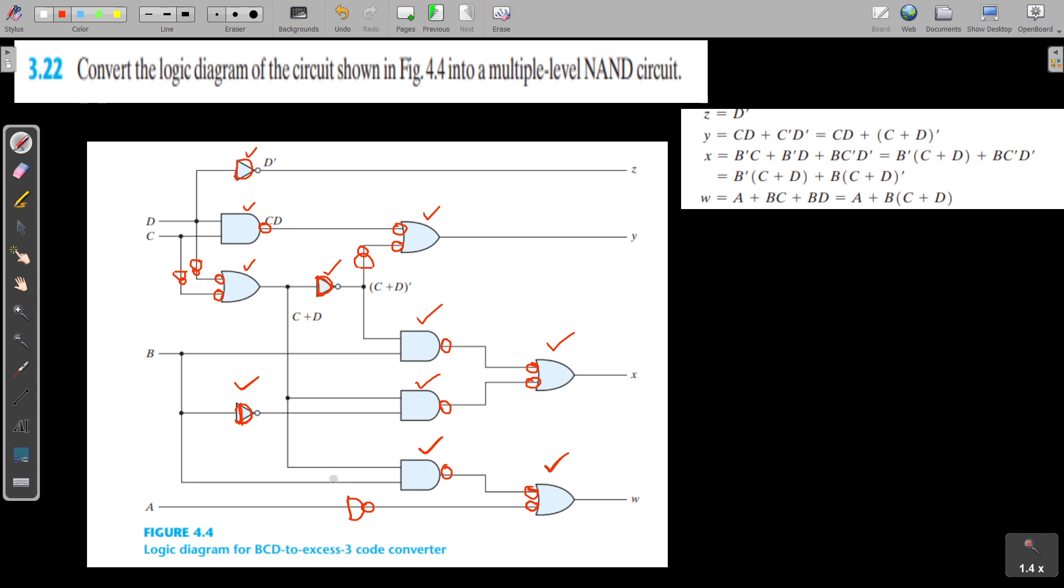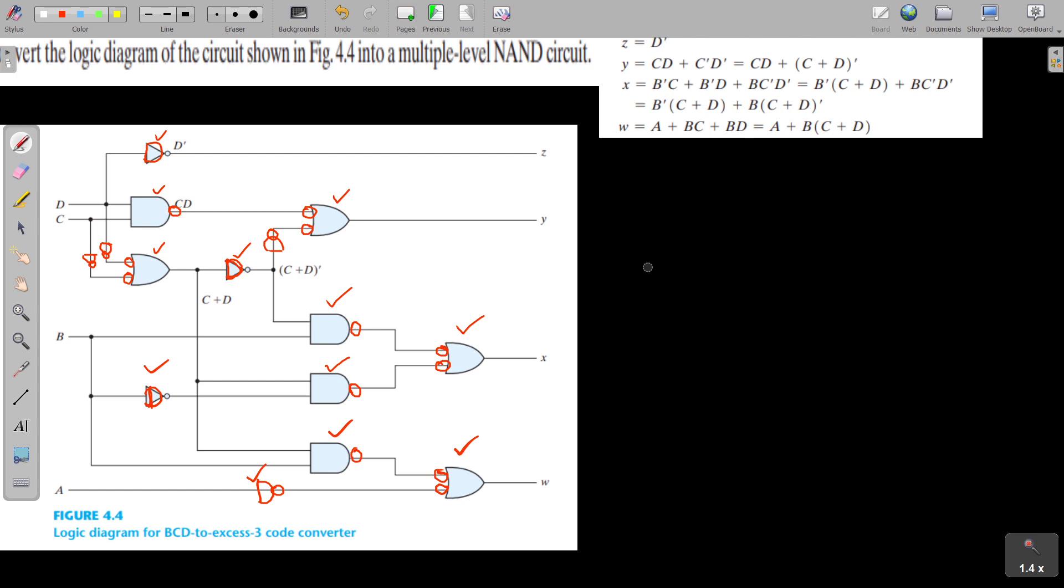So we have converted everything. Now we will draw this anew. So it is D and C, then this is being taken out. And here we have the inverter using NAND, so that our output is Z here. Good.